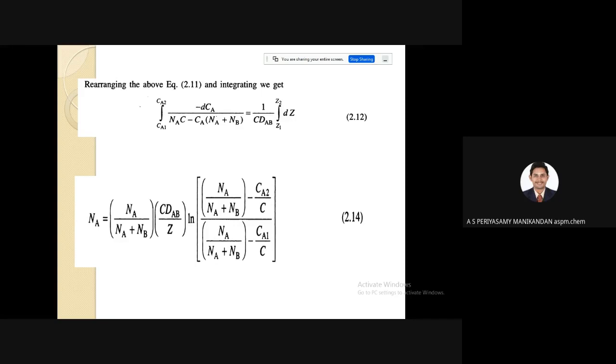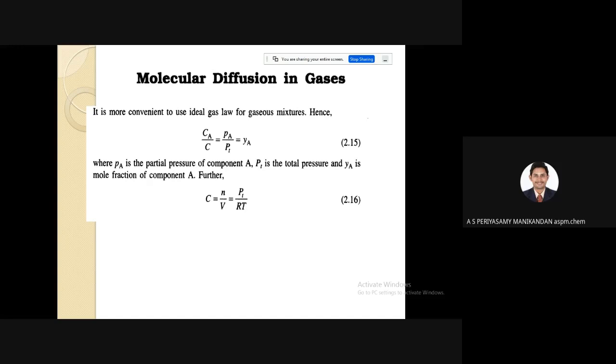This flux can be derived by using this flux equation, which is Na equals Na by Na plus Nb into C Dab by Z into ln of Na by Na plus Nb minus A2 by C divided by Na by Na plus Nb minus A1 by C. Here Dab is our diffusivity, C is our molar concentration, Z is the thickness or the distance of the movement.